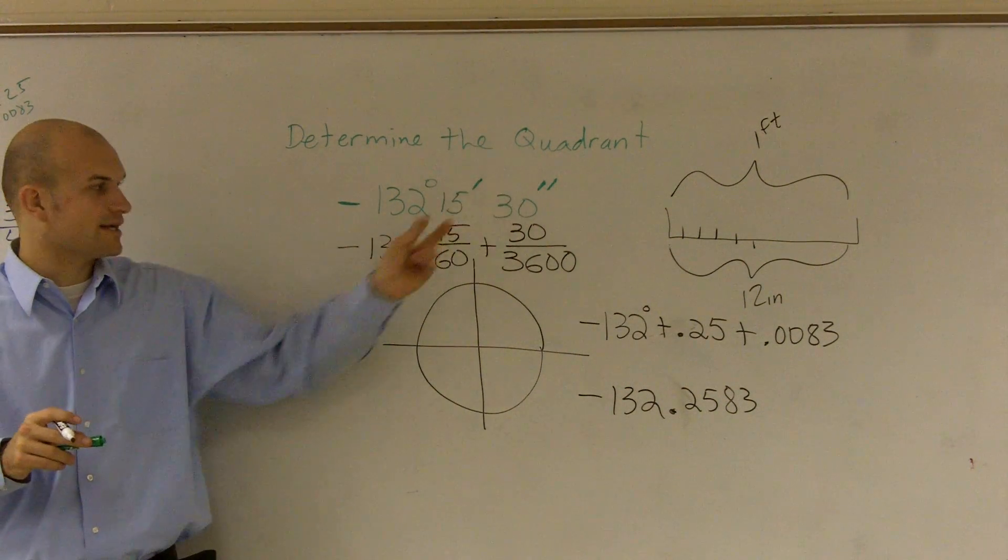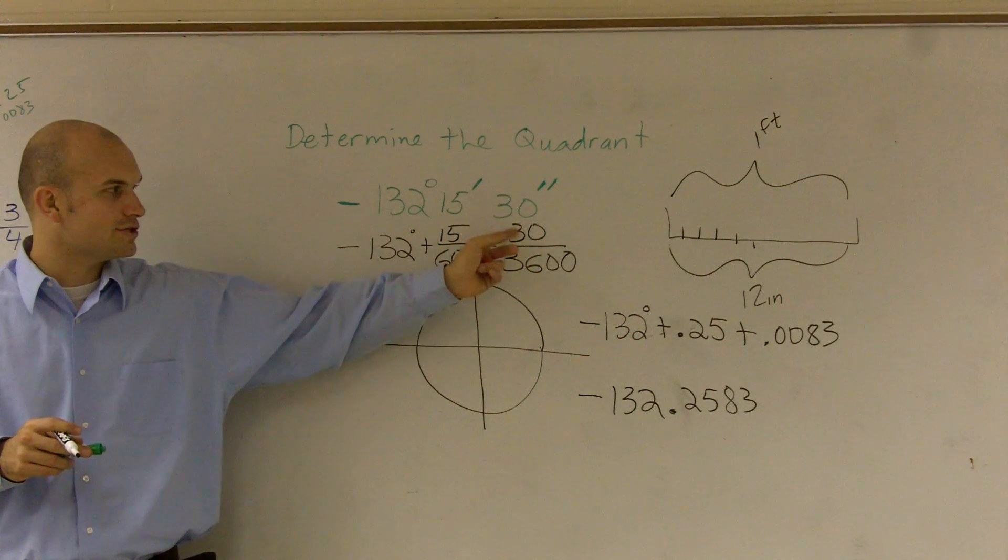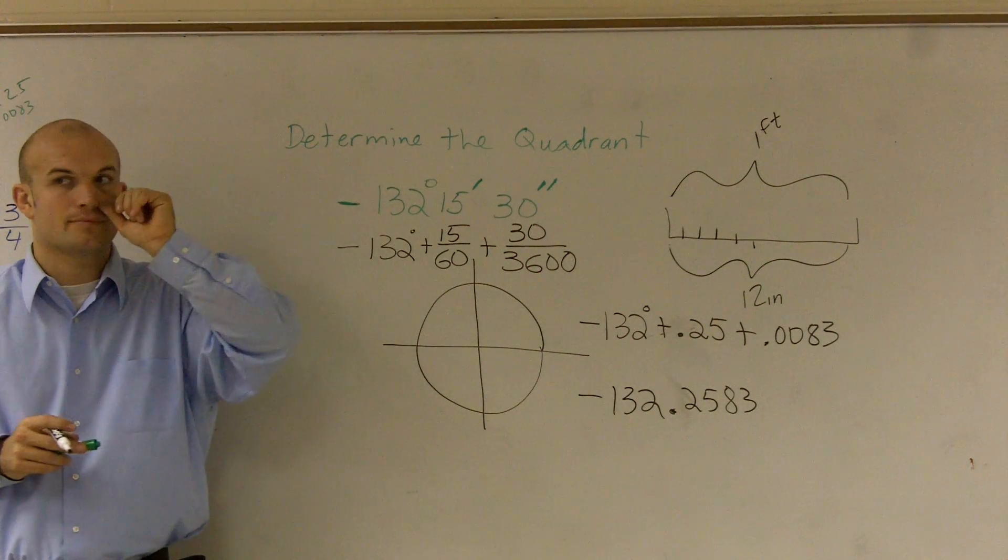So when you guys are given minutes and seconds, just remember, you take your minutes over 60, add it, and then your seconds over 3,600.